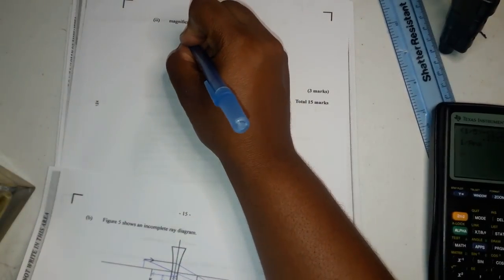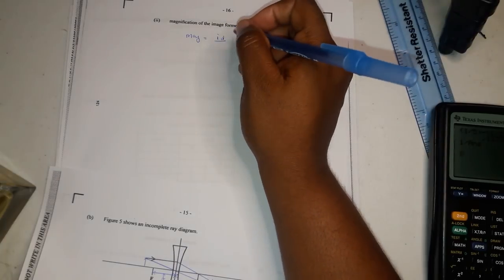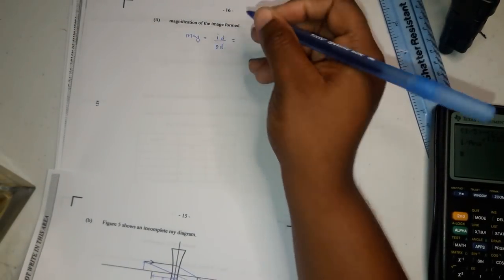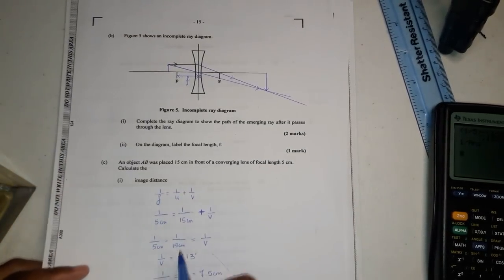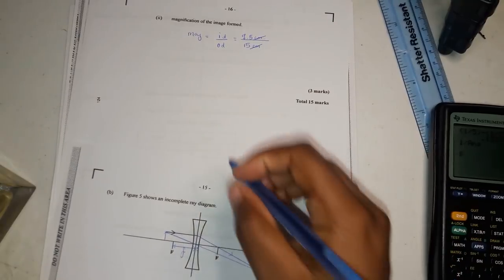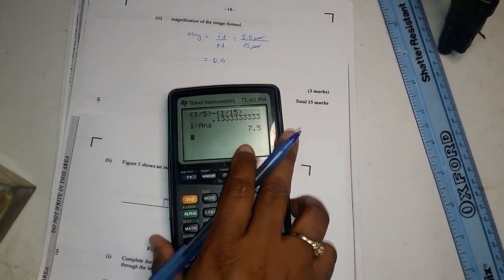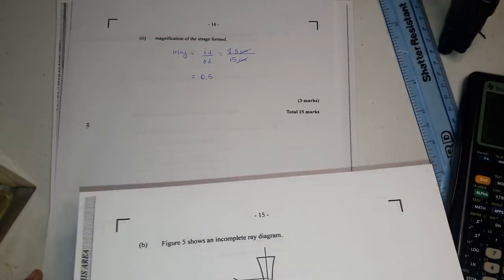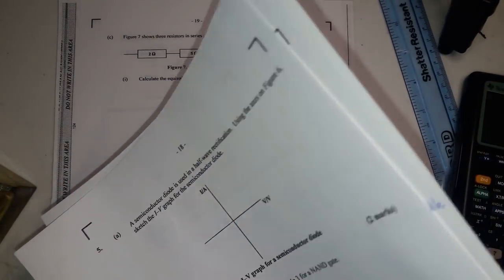Now the magnification. The magnification of the image would be mag equals the image distance over the distance of the object or the height of the image over the height of the object. So you would say the image distance over the object's distance and the image distance is we calculated just now 7.5 centimeters while the object's distance was 15. You know that magnification is a dimensionless quantity so it wouldn't have any units. So the answer would be 0.5. The image was drawn smaller than the object and that should have given you your 15 points.